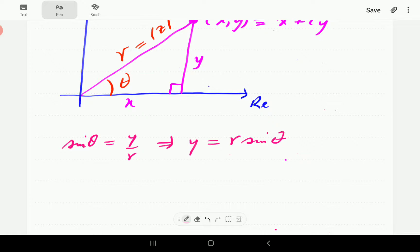And then a formula connecting x, theta, and r is the cosine formula. Cosine theta is x over r. So if we make x the subject of the formula here, then x is equal to r cosine theta.